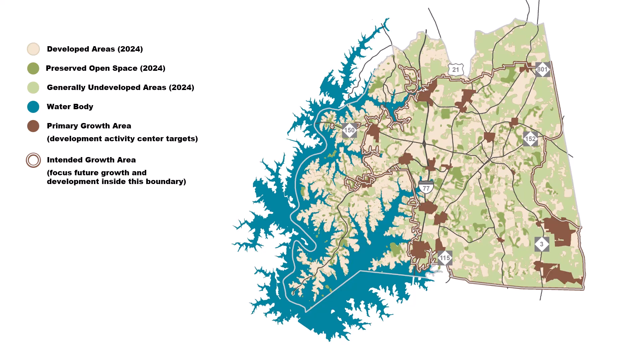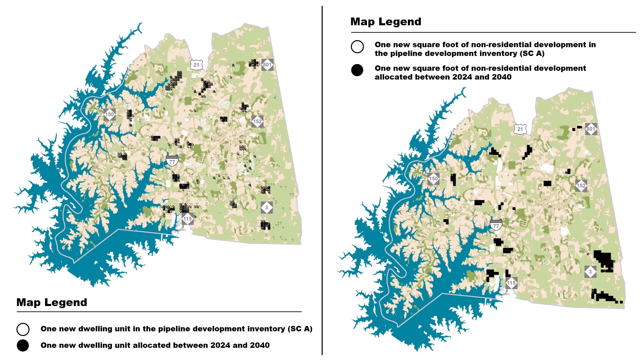Infrastructure will need to expand outward, even further than Scenario B, to support new growth and development located further away from existing service areas. Growth forecasted for the planning area in Scenario C was allocated to grid cells using computer software and the list of pipeline projects identified earlier in this presentation. White dots on the map represent the pipeline development inventory for Scenario A — projects already approved by the Town's Board of Commissioners that cannot be ignored in any alternative scenario. Black dots represent either one new development unit or one new square foot of non-residential development allocated to the planning area between 2024 and 2040 under the rules and preferences specifically for Scenario C.